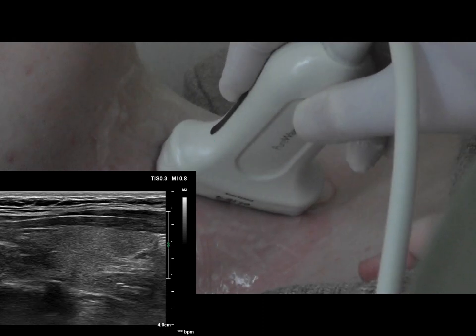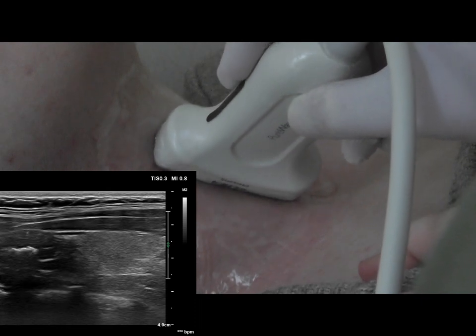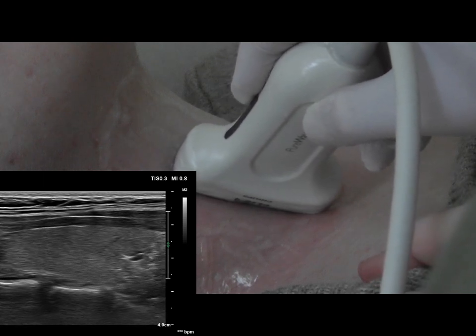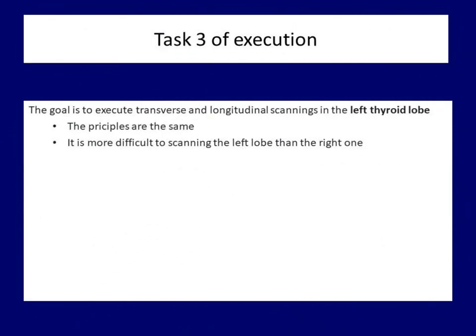Meanwhile, look at the monitor to detect when the thyroid tissue appears — repeat this several times, starting at the upper third, then the middle third, then the lower third of the lobe. If you can safely find the right lobe of the thyroid gland in longitudinal section while looking at the monitor all the way, you may move on to phase three: examining the left lobe. The principles are the same, only the difficulty level is higher.